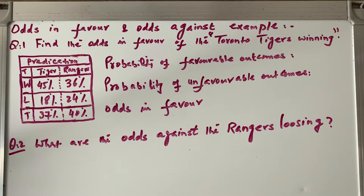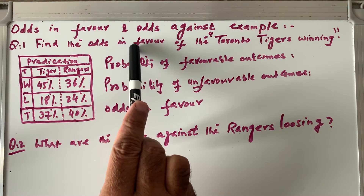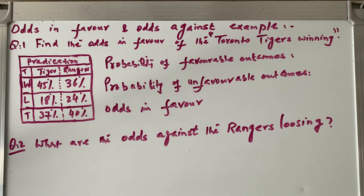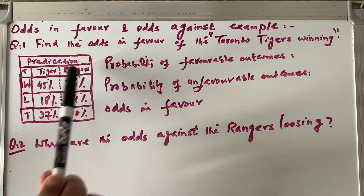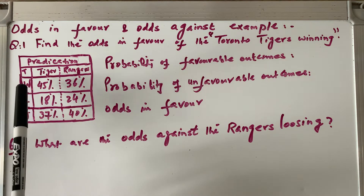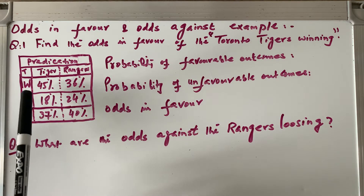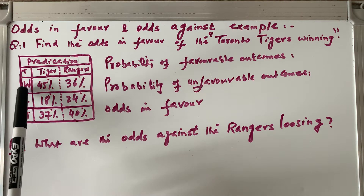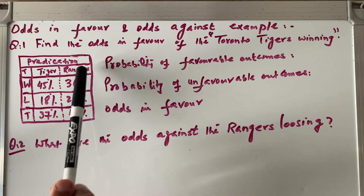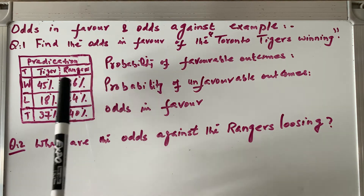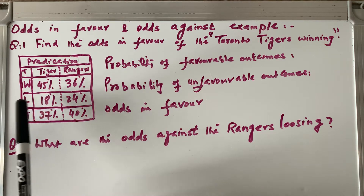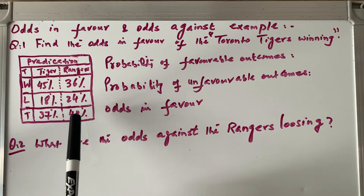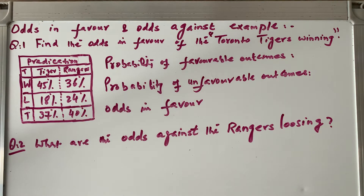Here is an example: find the odds in favor of the Toronto Tigers winning. There is a table of predictions for two teams — Tigers and Rangers — with three probabilities: winning, losing, and tie. Tigers have a 45% winning chance, Rangers 36%. Losing: 18% for Tigers, 24% for Rangers. Tie: 37% for Tigers and 40% for Rangers.